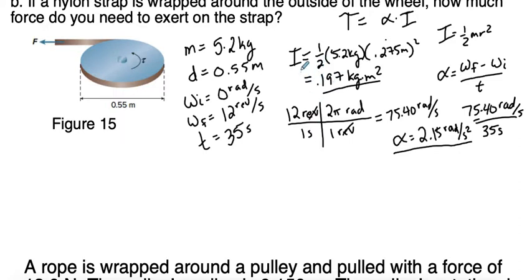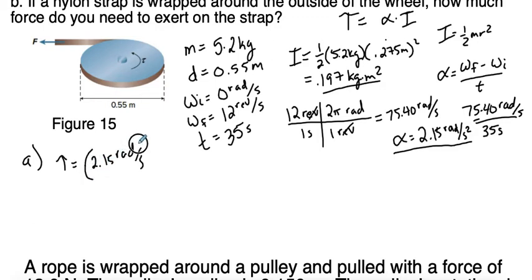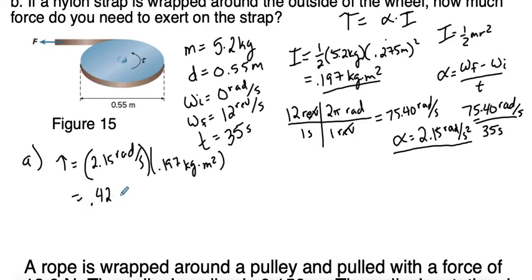Now we can use Newton's second law to find the torque for Part A. Net torque equals angular acceleration times moment of inertia: 2.15 radians per second squared times 0.197 kilograms times meters squared gives us 0.42 Newton meters. That's our answer for Part A.